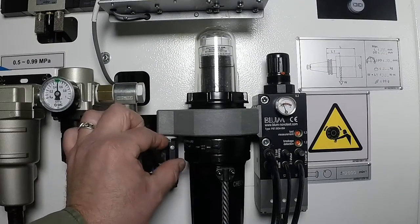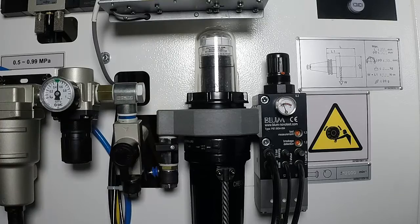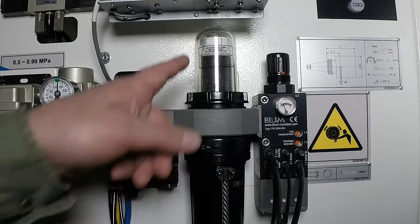To do this, first locate the pneumatic unit installed with your laser system and shut off the main air supply. While here, you should visibly inspect the filter reservoir.